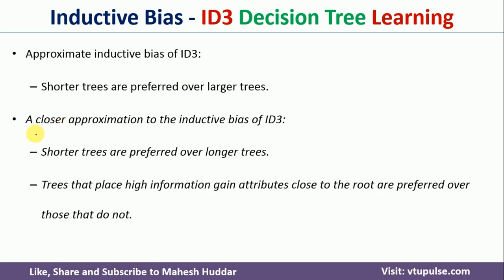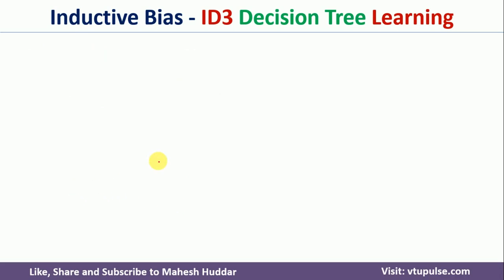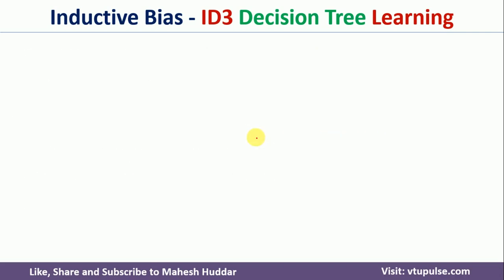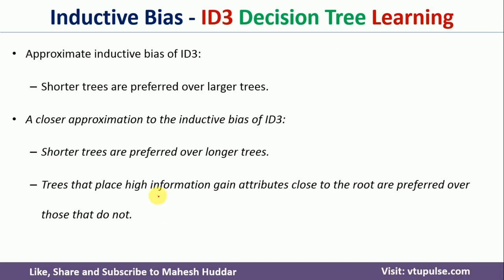The second one is called the closer approximation of inductive bias with respect to ID3. Again, we consider the shorter trees. But here, along with considering shorter trees, let us assume there are two shorter trees of the same size. In that case, we need to consider the information gain. The attributes which are more close to the root with the highest information gain — that will be considered.